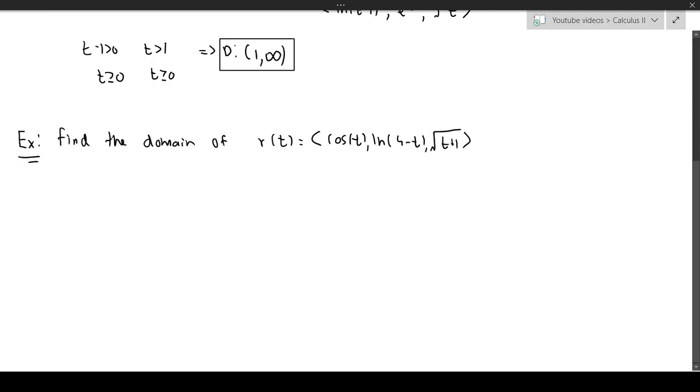So once again the first one is always defined. Cosine is never undefined anywhere. The second one we have 4 minus t is bigger than 0. And the last one we need t plus 1 to be bigger than or equal to 0. But then this implies that 4 is bigger than t, and t is bigger than... that should be plus 1 there.